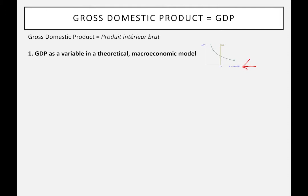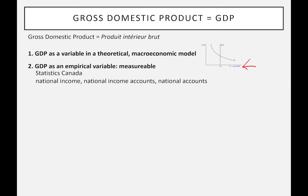As Keynes imagined it, GDP isn't really an actual number — it's a theoretical concept representing all the economic activities of an entire society or country. Later, in the late 1940s and 1950s, statisticians began to realize that it may be possible to actually calculate this number. Before this, economists had wondered how you go about measuring all the economic activity of a country, but it was done in practical terms in the 1940s and 1950s.